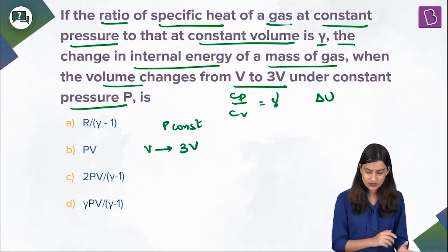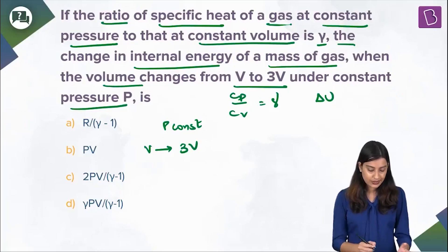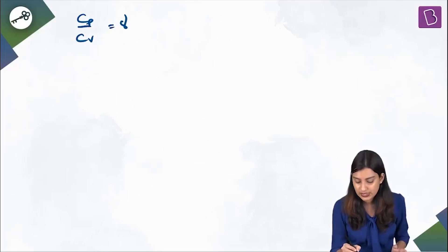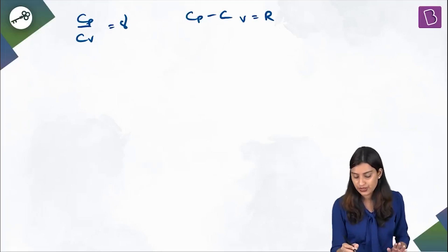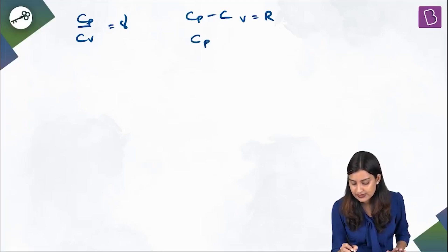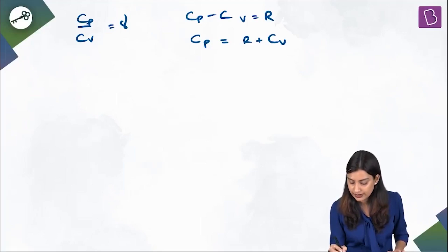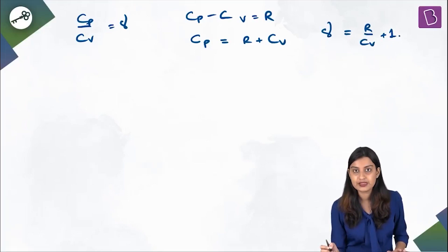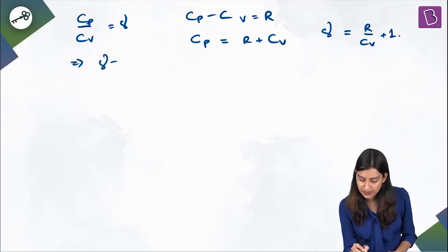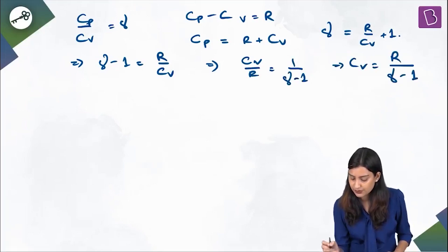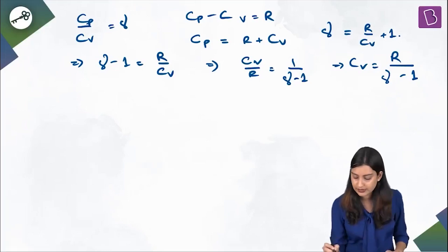We know that Cp/Cv = γ. Now, we also know that Cp − Cv = R. We can write Cp = R + Cv, then divide throughout by Cv to get γ = R/Cv + 1. So γ − 1 = R/Cv, which means Cv/R = 1/(γ−1), and therefore Cv = R/(γ−1). I'll highlight this because we'll use it shortly.